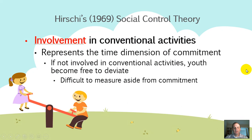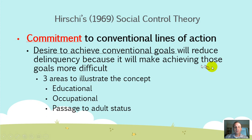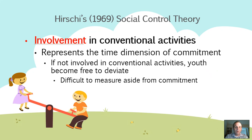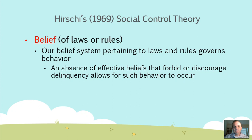The next concept within social control theory is involvement — involvement in conventional activities. It's essentially a time dimension of commitment. If you're involved in after-school activities, doing homework to be successful, volunteering at a homeless shelter or nursing home, the amount of time you invest in those conventional goals means you don't have time to direct your efforts toward selling cocaine or robbing banks. It's a difficult concept to measure apart from commitment, but it exists.